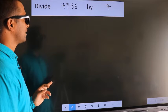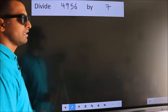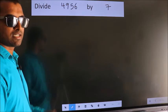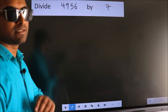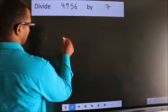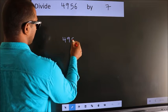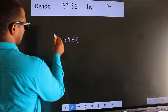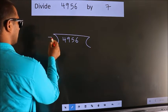Divide 4956 by 7. To do this division, we should frame it in this way. 4956 here, 7 here.